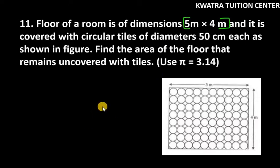It is covered with circular tiles. You can see in the diagram that we have circular tiles over floor of a room. Now, it says, with circular tiles of diameter 50 centimeter each as shown in figure. So, find the area of the floor that remains uncovered with tiles.